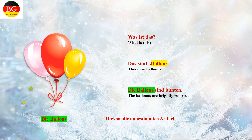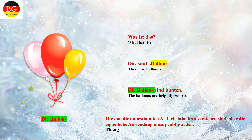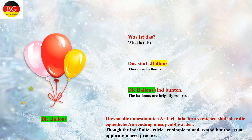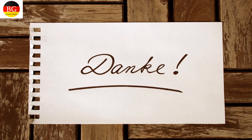Though the indefinite articles are simple to understand, the actual application needs practice. Use the tips and tricks discussed in our previous lesson, and start memorizing the German nouns for objects in your surroundings — that will make things simpler. I hope you all have enjoyed and understood today's topic. Don't forget to like, share and subscribe. In our coming videos we will discuss the negative article — 'kein' or 'keine' — so stay tuned. Herzlichen Dank für das Anschauen meiner Videos. Auf Wiedersehen.